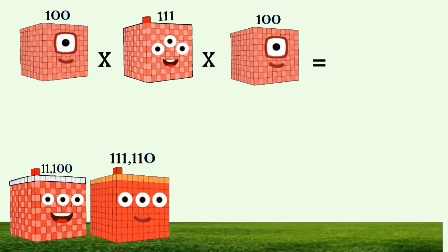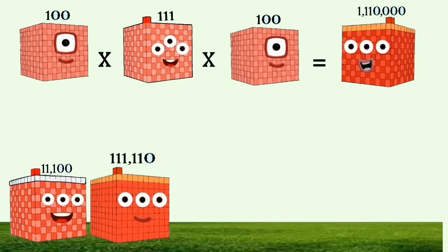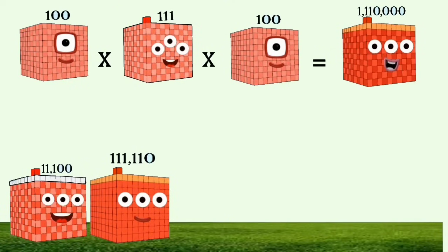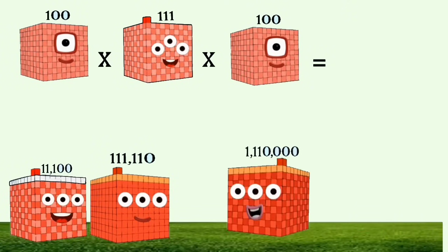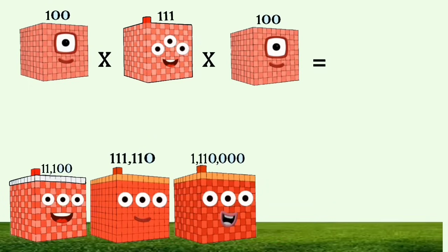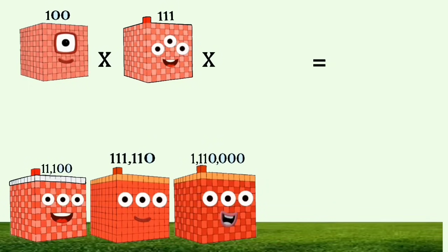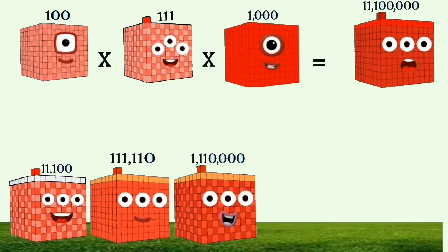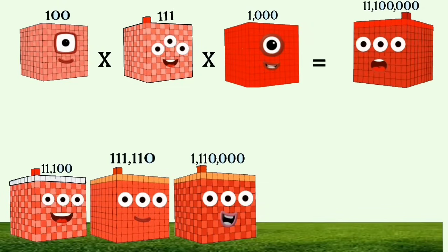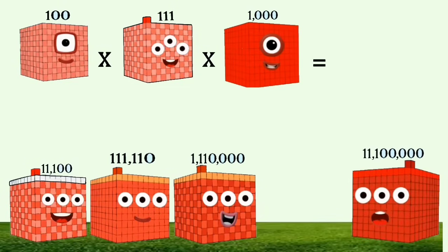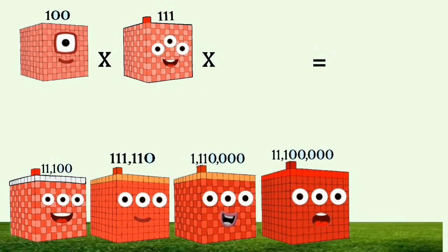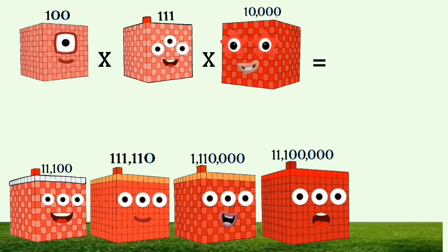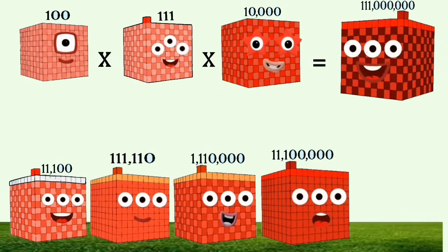100 times 111 times 100 equals 1,110,000. 100 times 111 times 1,000 equals 11,100,000. 100 times 111 times 10,000 equals 111,000,000.